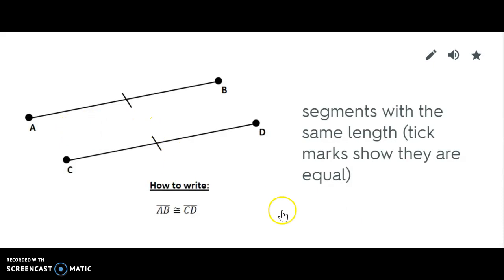And so congruent segments are two segments that have the same length. And so here's some information. First, you should notice that there's tick marks. Tick marks show that they equal each other. So the top segment is equal to the bottom segment. The second thing that you should notice is that this is our congruent sign. It's an equal sign with a little squiggly above it. And so this says that segment AB is congruent to segment CD.